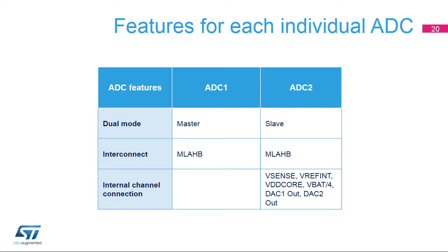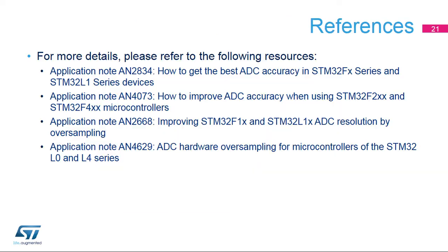The STM32-MP1 embeds two ADCs. ADC1 and ADC2 can be configured to work together in dual mode so that each analog-to-digital conversion can be synchronized between the two modules. ADC3 works as a standalone converter. Several application notes dedicated to analog-to-digital converters are available. To learn more about ADCs, you can visit a wide range of webpages discussing successive approximation analog-to-digital converters.